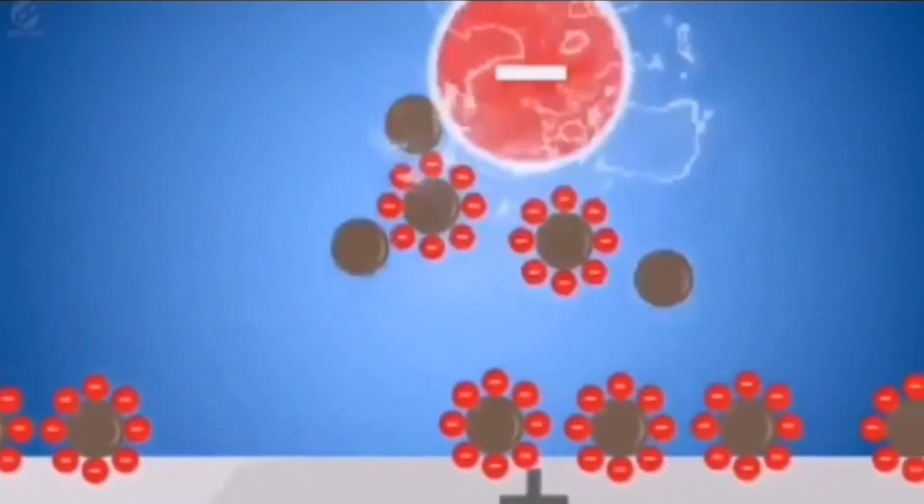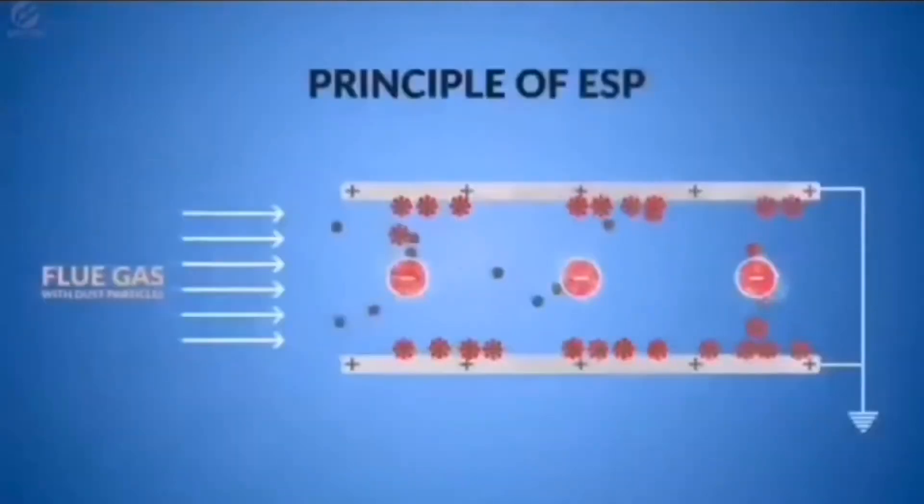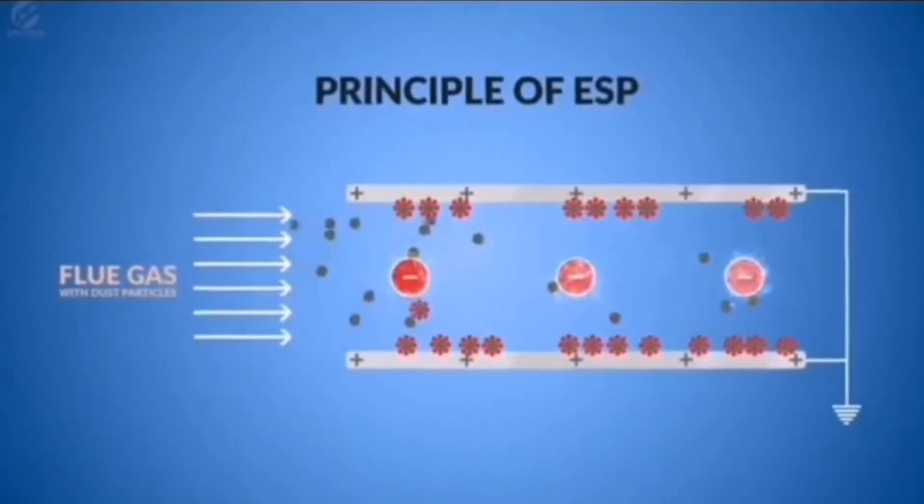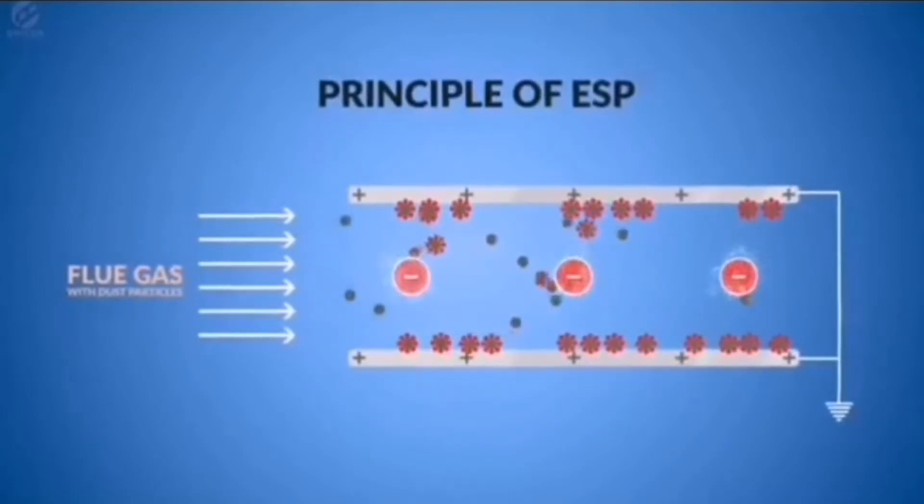These electrons charge the dust particles negatively. The negatively charged particles stick to the cathode. This process is called collection.